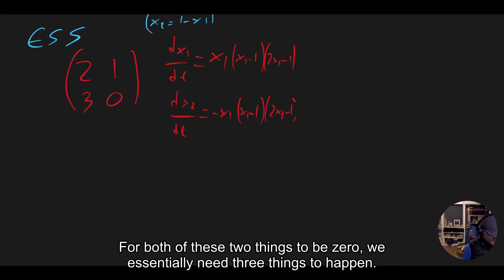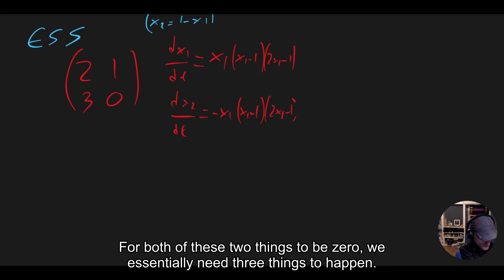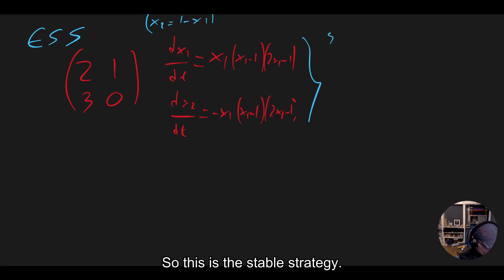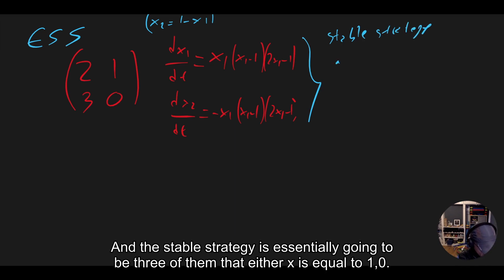For both of these two things to be zero, we essentially need three things to happen. So this is the stable strategy. And the stable strategy, there's essentially going to be three of them: either x equals (1, 0).